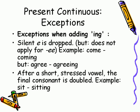Present continuous exceptions when adding ING. Silent E is dropped, but does not apply for double E. Example: 'come' → coming; but 'agree' → agreeing. After a short stressed vowel, the final consonant is doubled. Example: 'sit' → sitting.